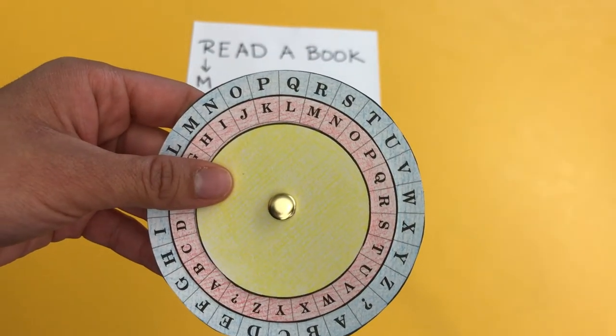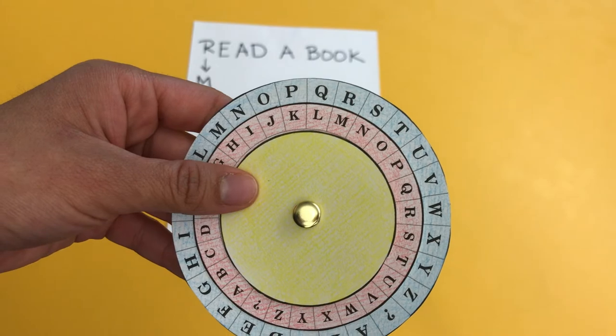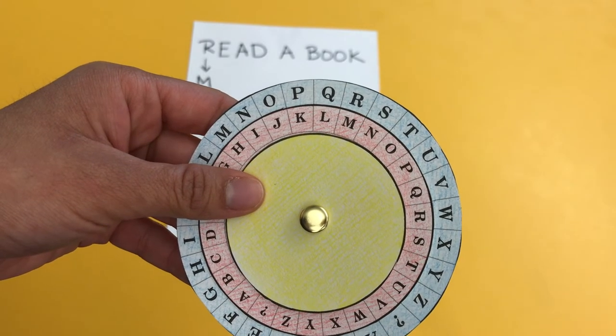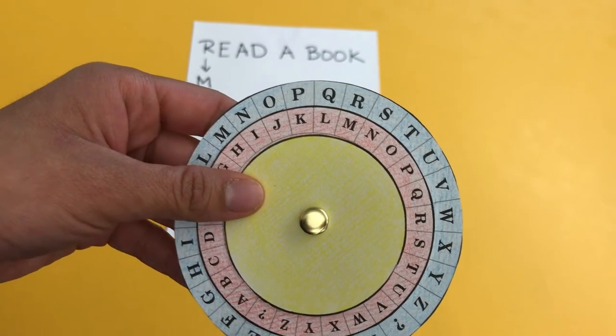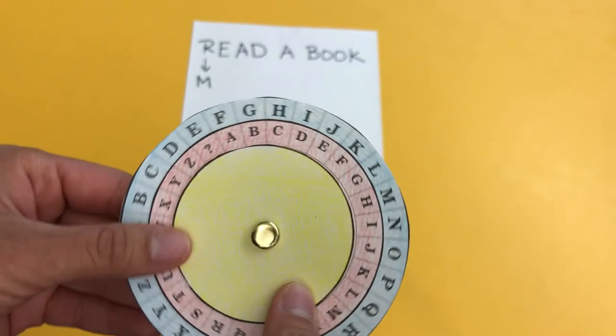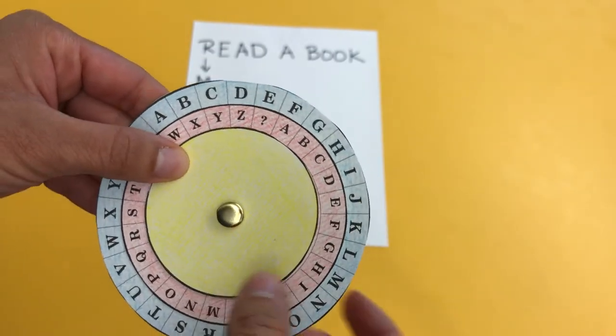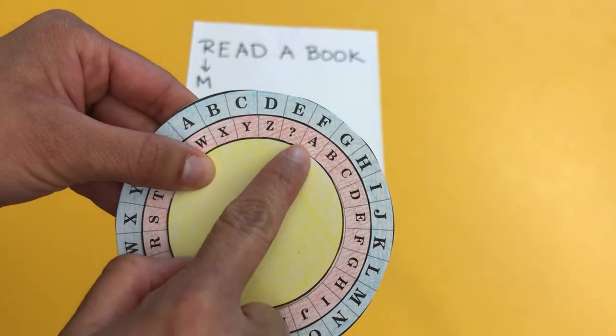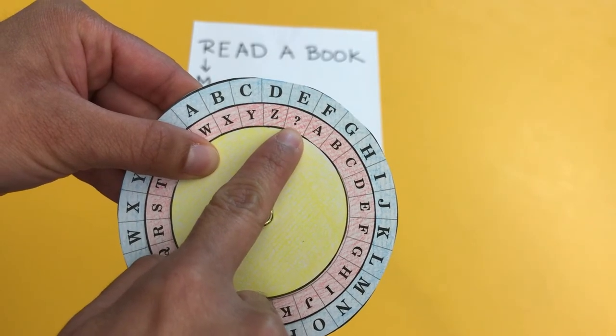Let's do the next letter which is E. Find the letter E in the big wheel and write the matching letter below in the medium wheel. It will be the question mark.